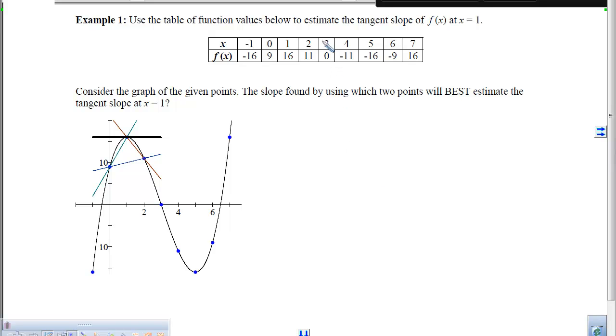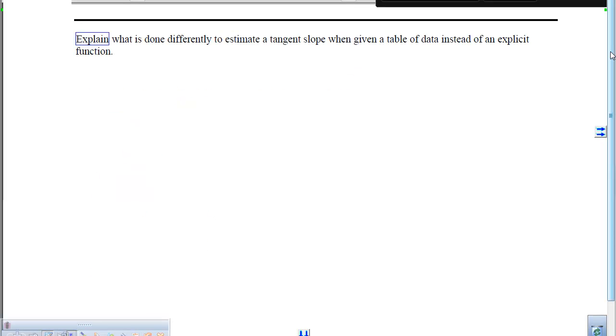For example, if we wanted to find the tangent slope at 3, we would use the point 2, 11, and 4, -11, because those are the two that flank 3. If we wanted to estimate the slope at 4, we would use the point 3, 0, and 5, -16. We want to get as close as we can to the given point from both sides.